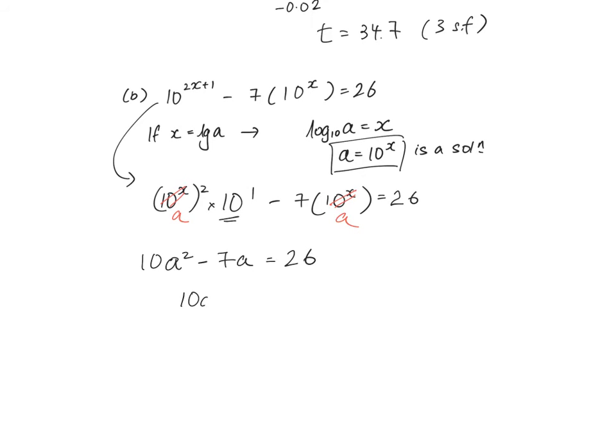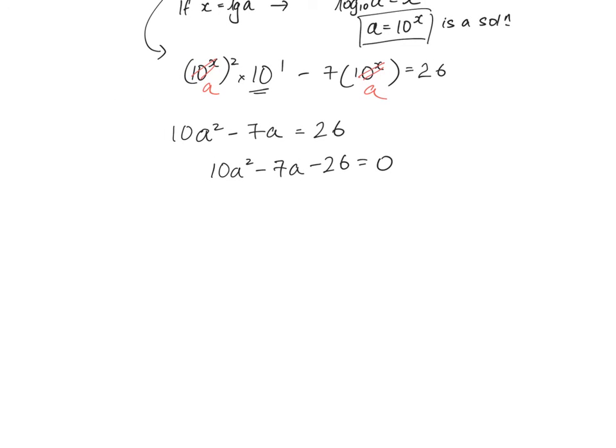As usual, for all quadratic equations, I make the right-hand side to be 0. And I have factorized this by using the quadratic equation, factorization, or using your cross method, or using your calculator. You have a minus 2 times 10a plus 13.